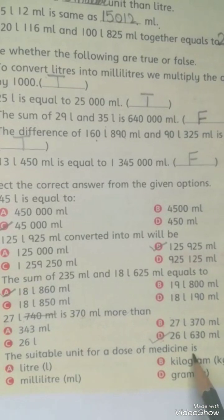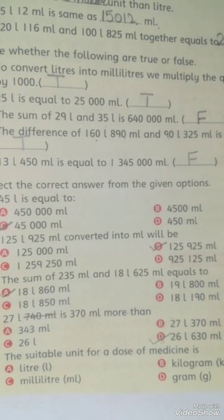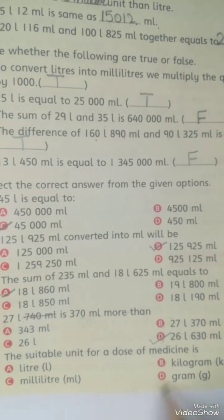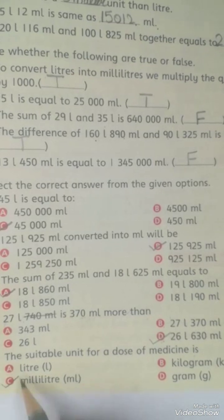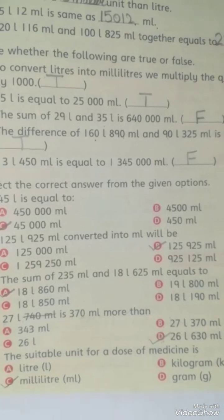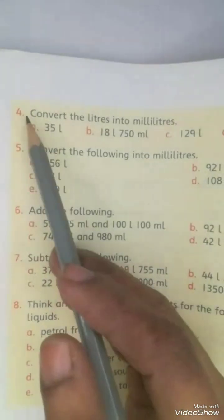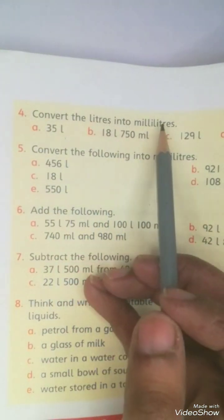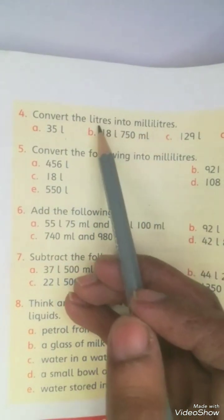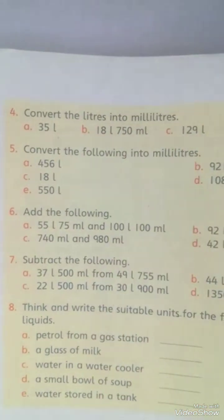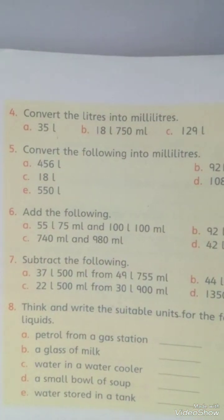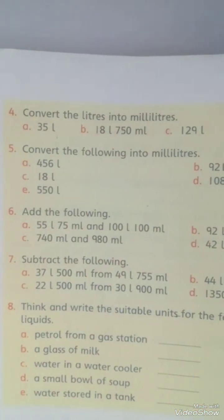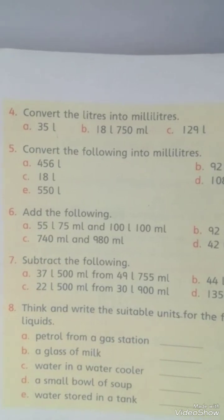The suitable unit for a dose of medicine — it cannot be kilogram, it cannot be gram, it cannot be liter. Milliliter is your answer. Now starting question number 4: convert the liters into milliliters. We will simply multiply by 1000 — each value will be multiplied by 1000.